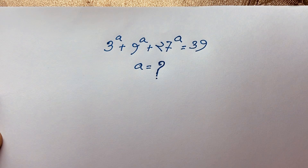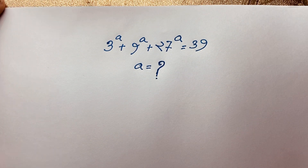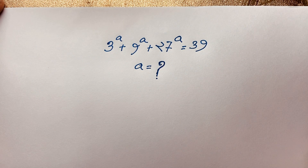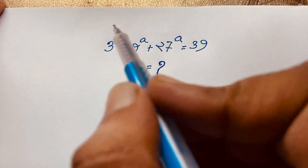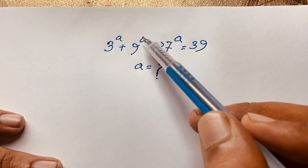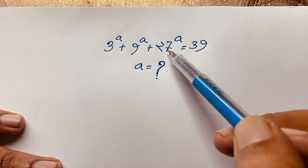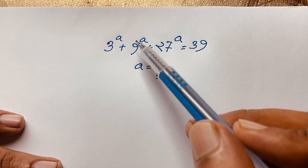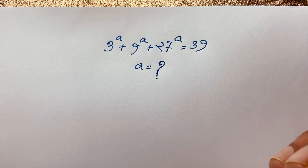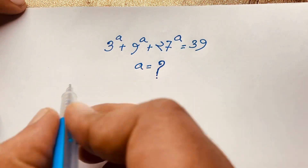Hello everyone. In this video we solve a math olympiad question: 3 to the power a, plus 9 to the power a, plus 27 to the power a equals 39. What is a? First, if you try a equals 1: 3 to the power 1 is 3, 9 to the power 1 is 9, 27 to the power 1 is 27. So 27 plus 9 plus 3 equals 39. Easily, the final answer is a equals 1. But let's solve this properly.